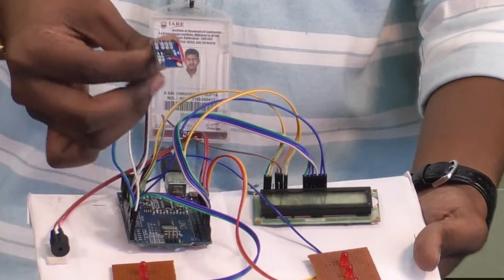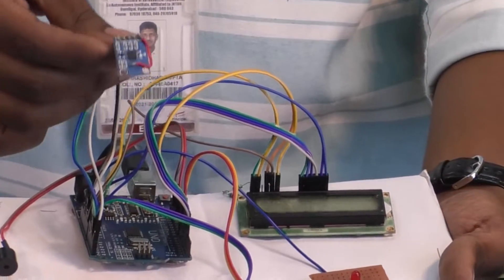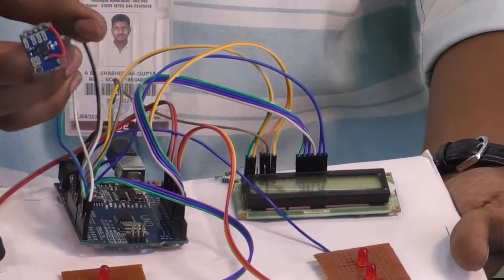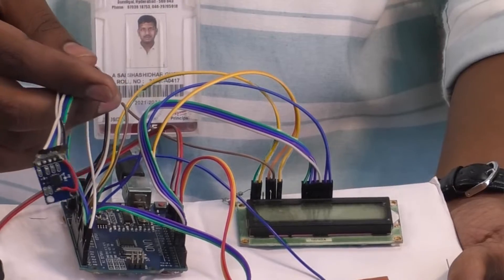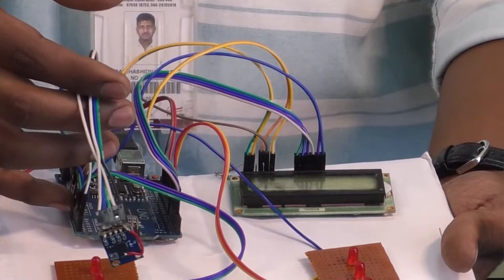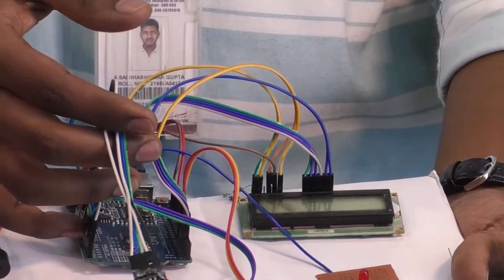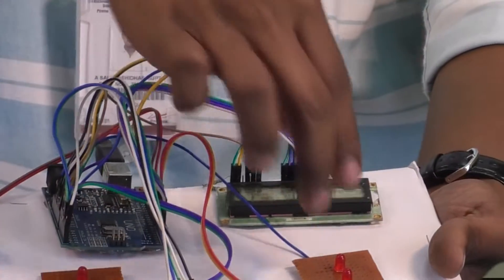So whenever the circuit is active, this sensor produces a voltage and this voltage is given to the Arduino and the Arduino converts it into digital equivalent and based on that digital equivalent, the indicator gets activated.